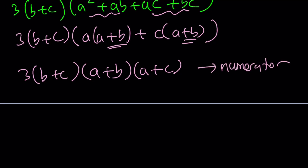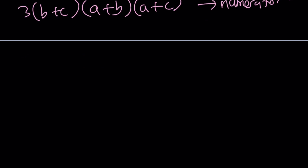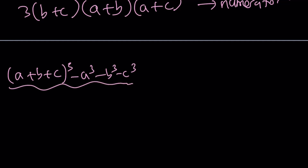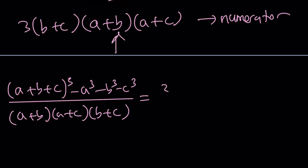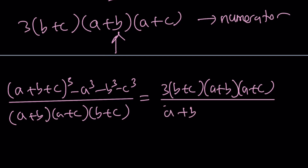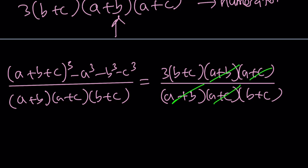Now remember the original expression was a plus b plus c cubed minus a cubed minus b cubed minus c cubed as our numerator, divided by a plus b times a plus c times b plus c. The numerator simplified to 3 times b plus c times a plus b times a plus c, and the denominator stays the same: a plus b times a plus c times b plus c. As you can see, pretty much everything cancels out except for the 3. So this expression in its simplest form is equivalent to 3.